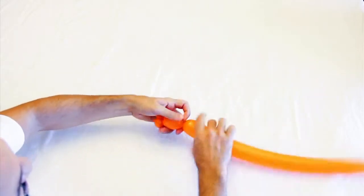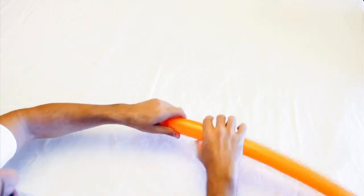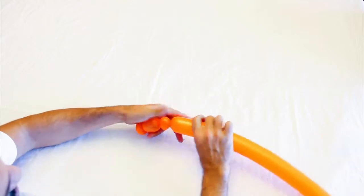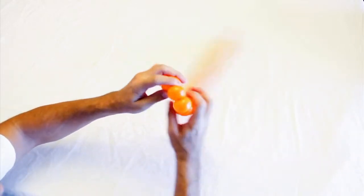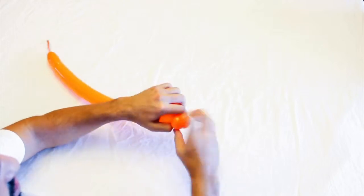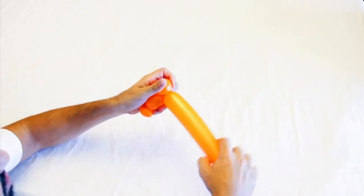You're going to do about a two inch bubble for the head, followed by two bubbles that are probably three quarters inch apiece, twist those together. These are going to be for the horse's ears.